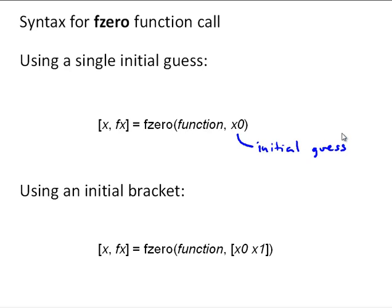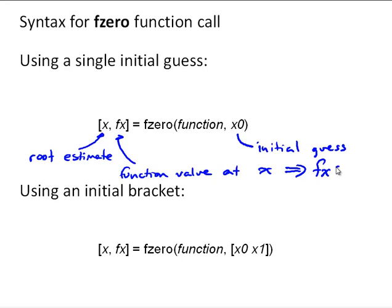And the output is going to be x, which is the root estimate. And this fx, that's the function value at x, which is at that root estimate. And if it was exact, fx should be 0 if it's the exact root.